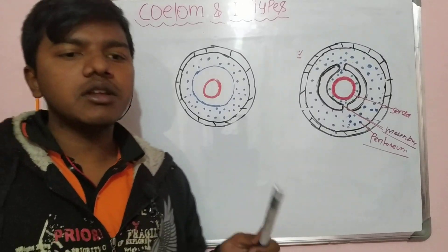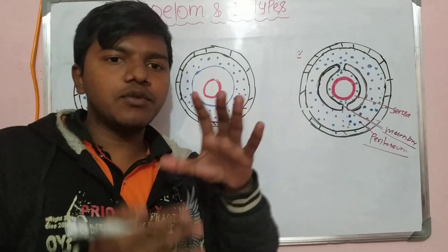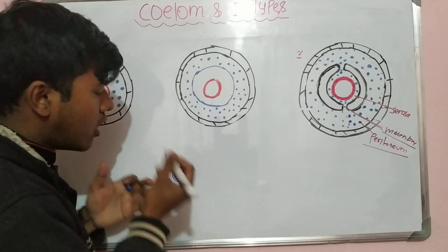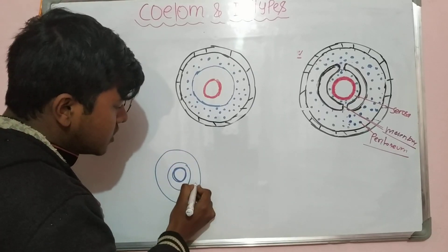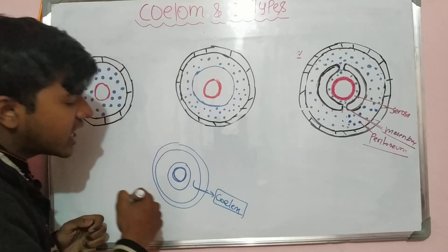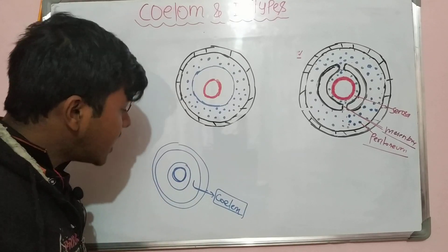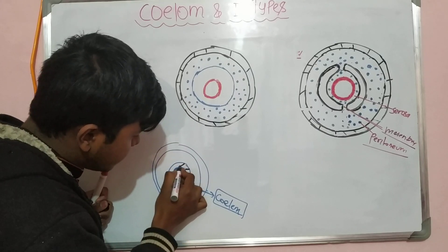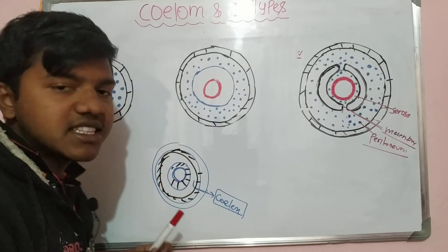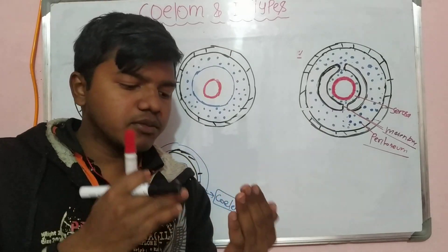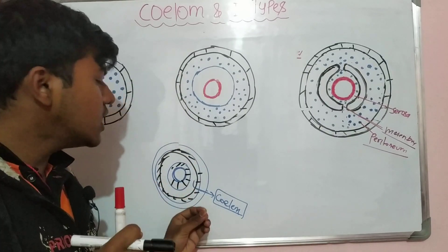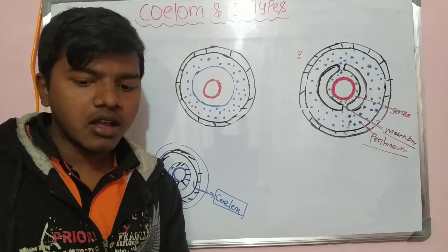If we cut the body in cross-section, we can see the gut, then a layer of muscles, then a gap, and then another layer of muscles, and lastly the outer skin. This gap is known as the silem, where various organs are accommodated. The primitive gut has an endodermal lining, and the silem is surrounded on both sides by the mesoderm, because muscle is a type of connective tissue derived from mesoderm. So the true silem in our body is surrounded on both sides by mesoderm.